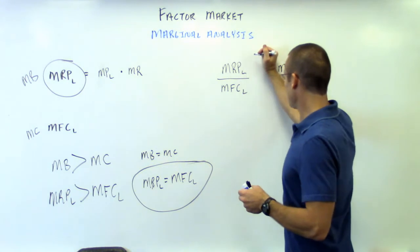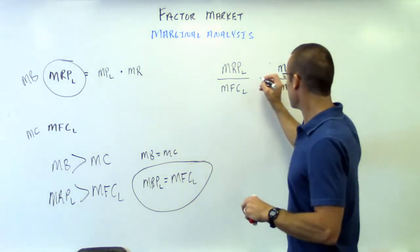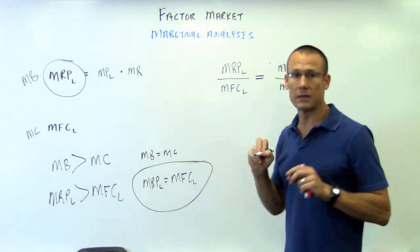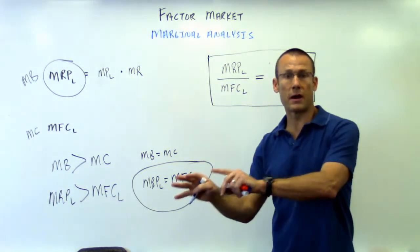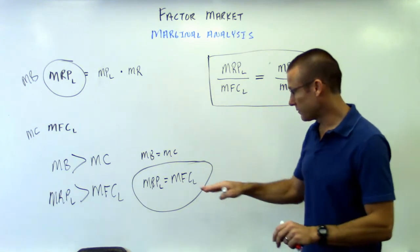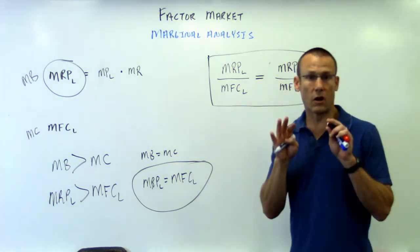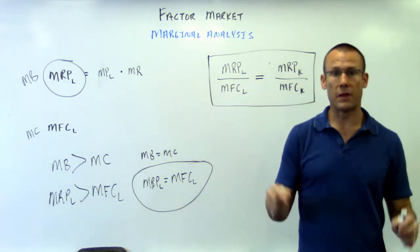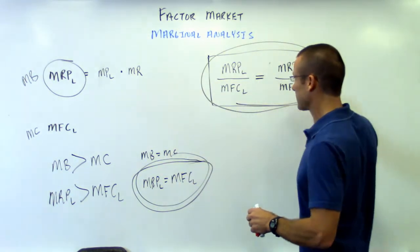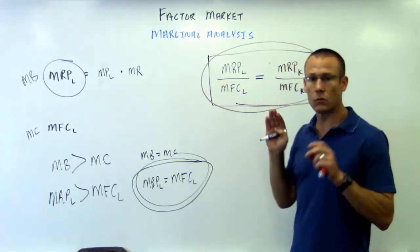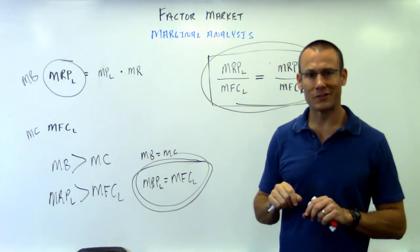We keep doing this — if there's an inequality, we favor the one with the greater ratio, until they become equal. Now we know both how much labor to hire and how much capital to spend. When we hit that equality, we're maximizing — we're getting the maximum benefit. That's marginal analysis with the factor market.